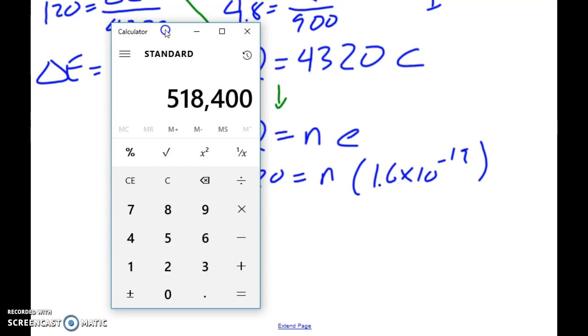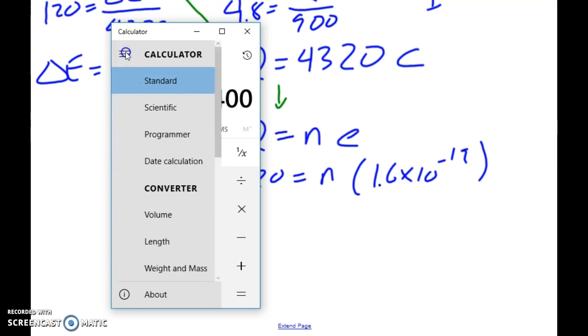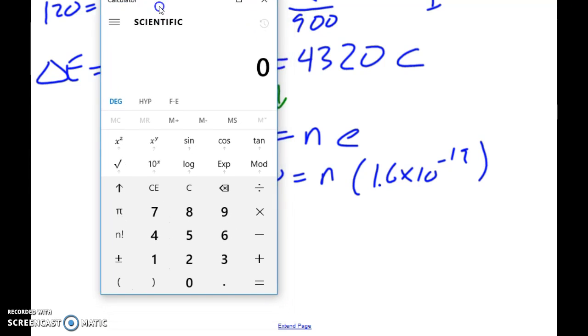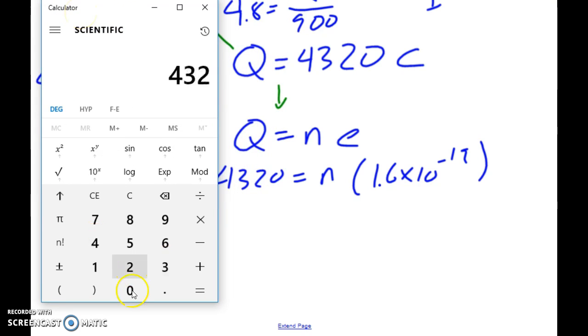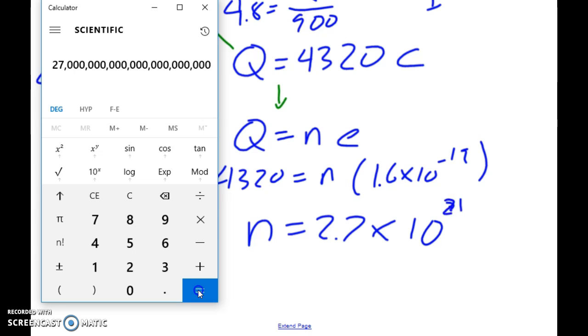In this particular case, this calculator is not going to work because we need some scientific notation. So we'll go here and we'll go to scientific. So we know in this case it's going to be 4,320 and we divide this by 1.6 and make sure that you're in the habit of using this button right here. So it's negative 19 and that is a lot of zeros. So let's figure that out. So N is equal to 2.7 times 10 to the power of 21 electrons.